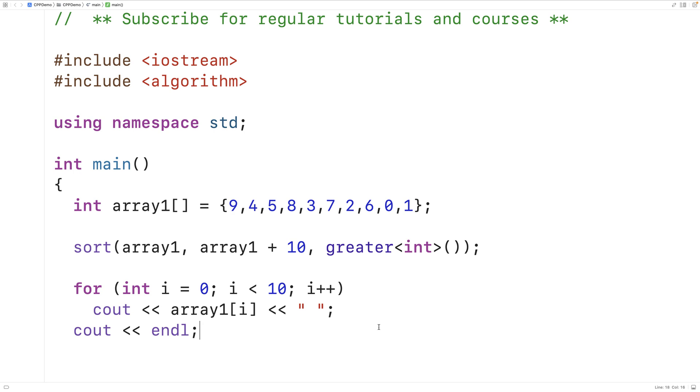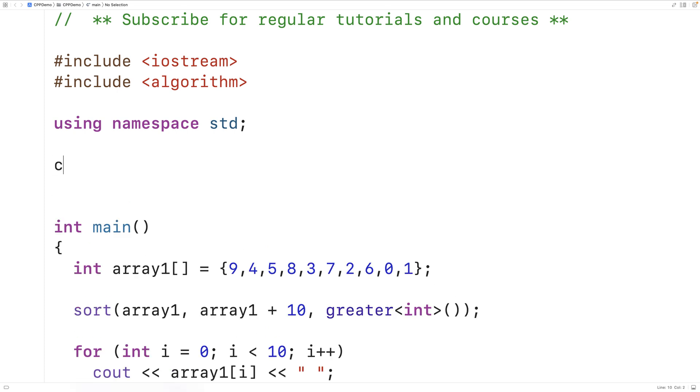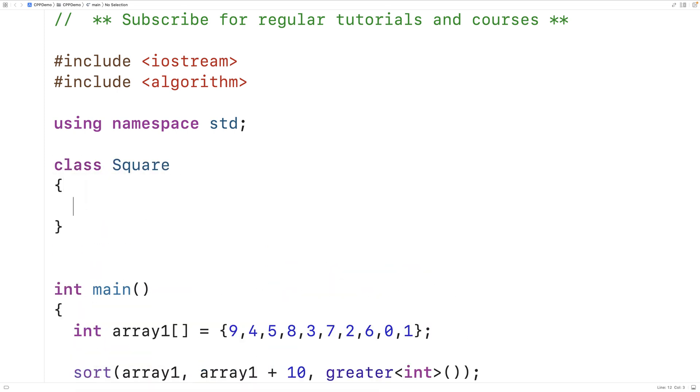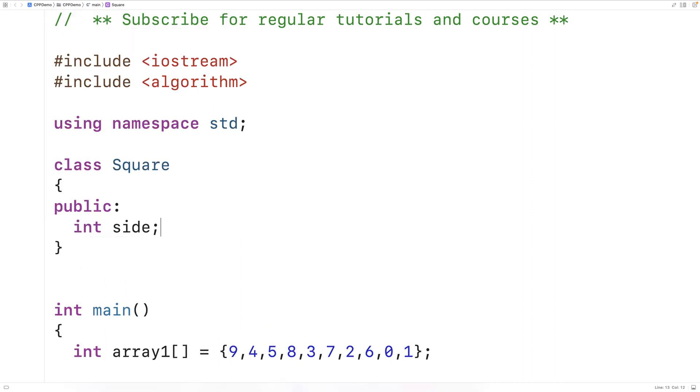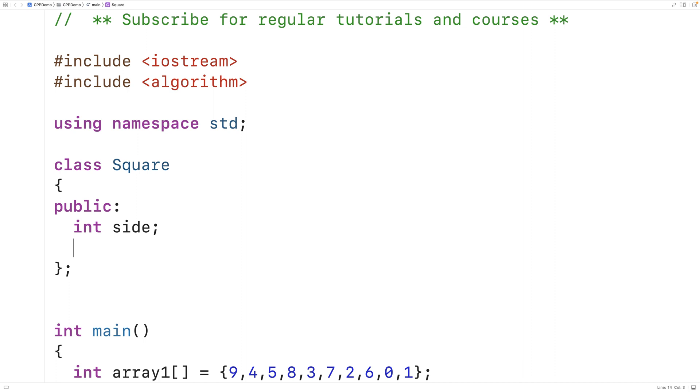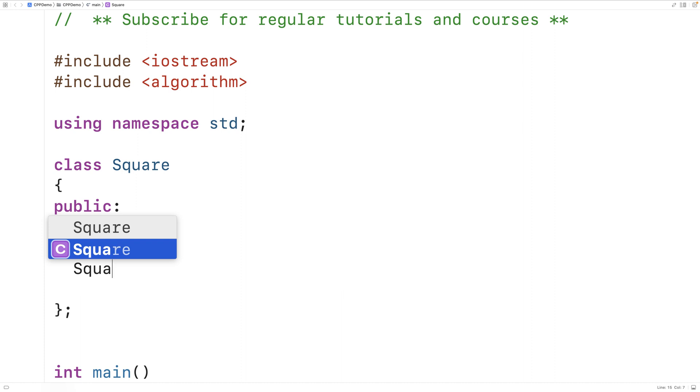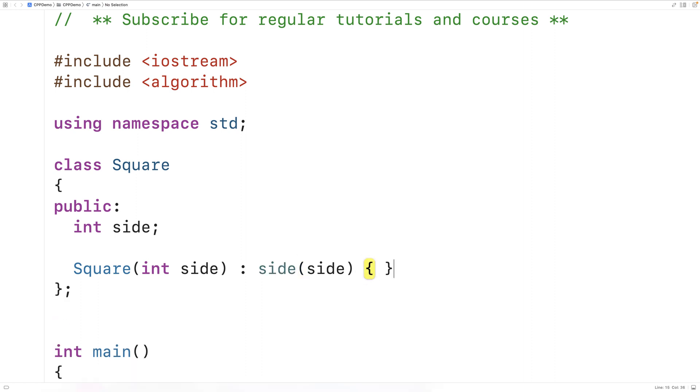Now we can actually use the sort function to sort user defined types as well. So by user defined types, I mean things like classes. Because if we have a class like this, let's say class Square, where our square objects are going to have a single public member variable called side, representing the length of a side of a square. We'll make a constructor to set that side member variable to the argument that the constructor is provided.